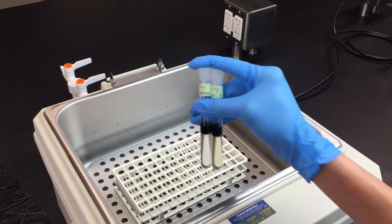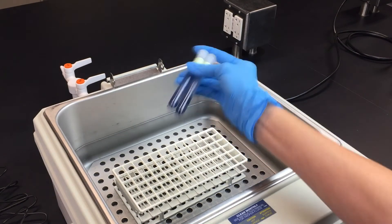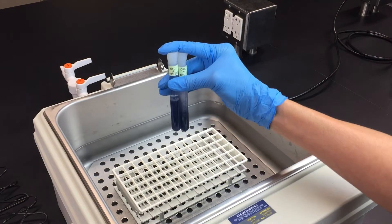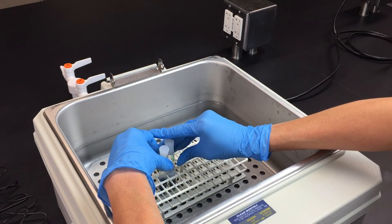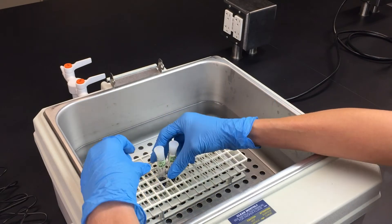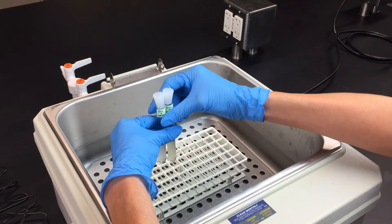Give the tubes a quick shake, then put them in the 37 degree water bath for 60 minutes. Every 15 minutes, invert the tubes two to four times.